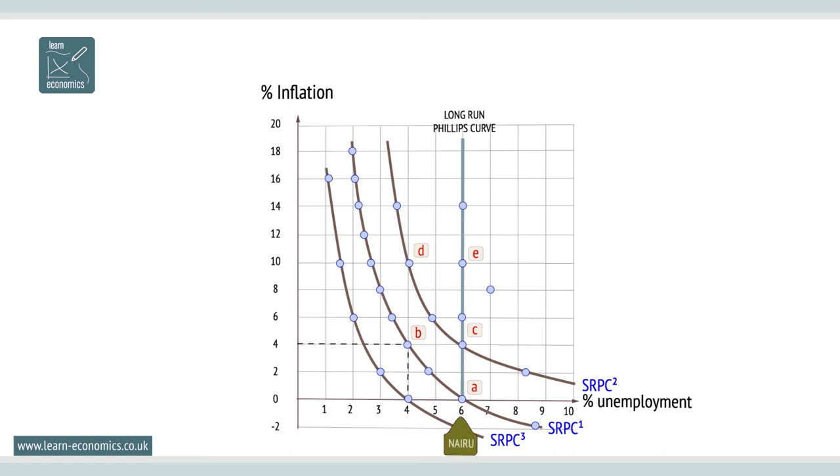For example, if NARU is at 6%, point A, a fiscal stimulus will simply result in a short-term reduction in unemployment to 4%, point B. However, if the long-run Phillips curve is shifted to the left through supply-side policy, NARU can drop to 4% without inflationary pressure.